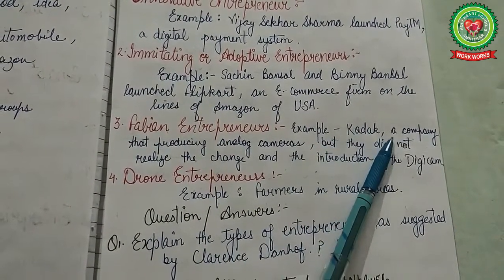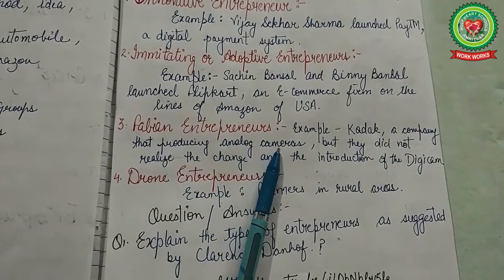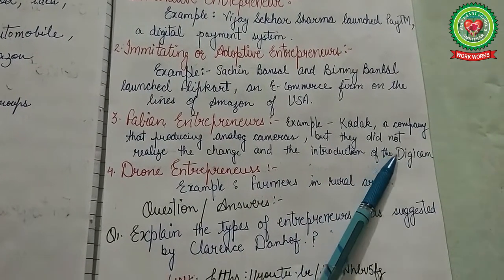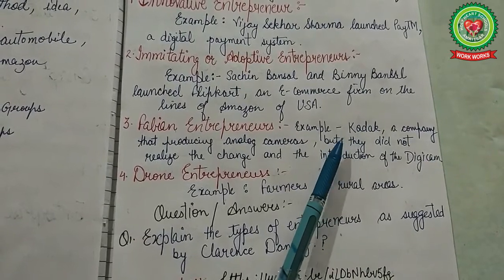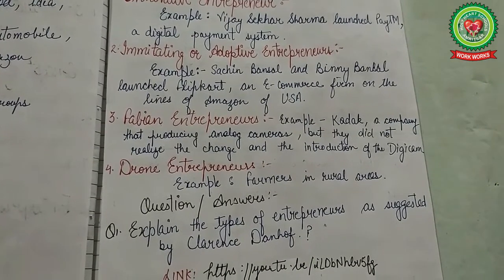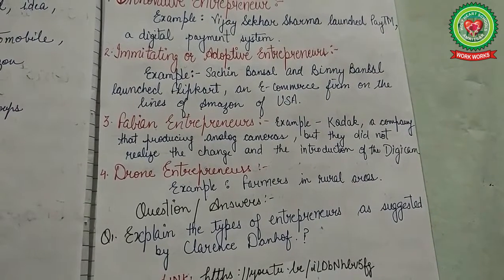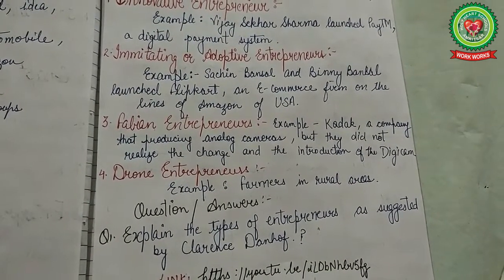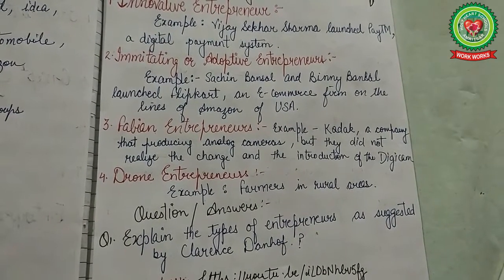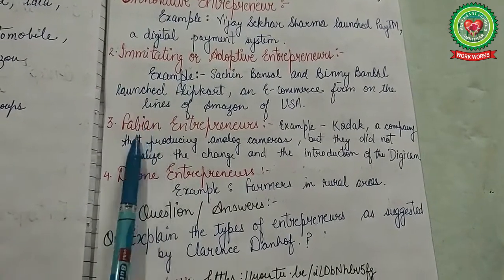The third type is the Fabian entrepreneur. For example, the Kodak Company, which was producing analog cameras, did not realize the change brought by digital cameras, and that is why they lost their market leadership. Fabian entrepreneurs are shy and lazy — they neither introduce something new nor have a desire to imitate others.